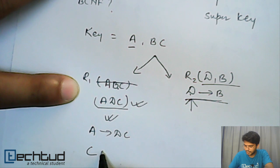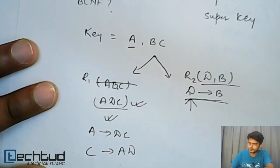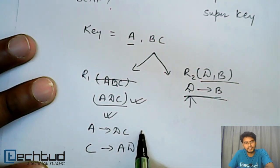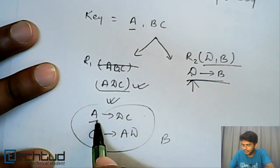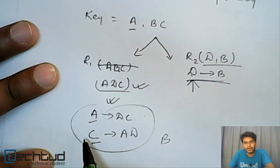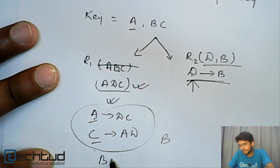C determines AD. So this will be the functional dependency in R1 and this is in BCNF. If you go and find out, A and C will be candidate keys, and as the determinant of both functional dependencies is a key, this is in BCNF.